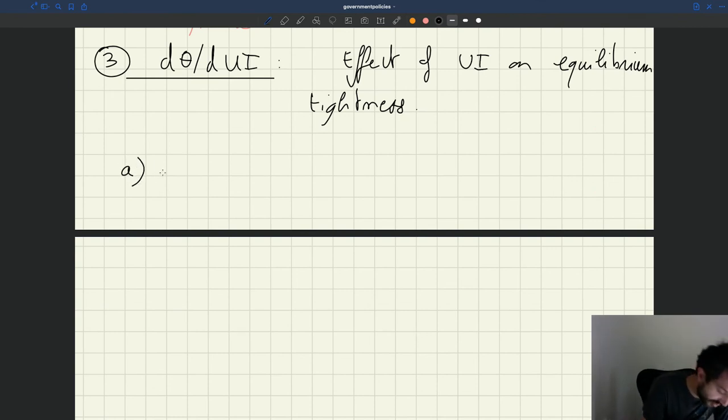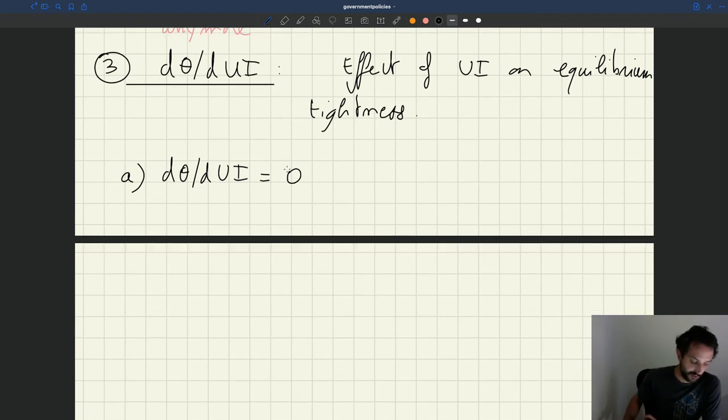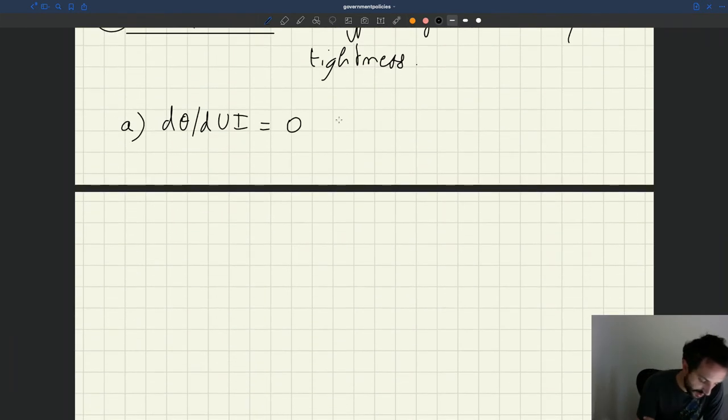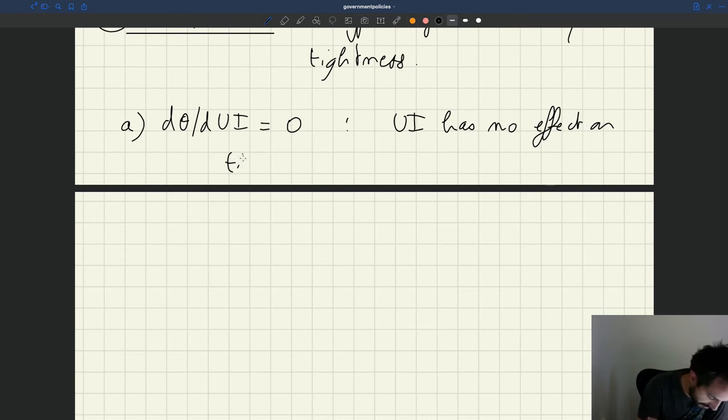So the simplest situation is where actually UI has no effect on tightness. That would be the first case. So in theory, this could happen, say in a matching model with rigid wage. So that would be a model in which you have that. We see, right, in the model with rigid wage, UI has no effect on tightness. That's if you think about theory.